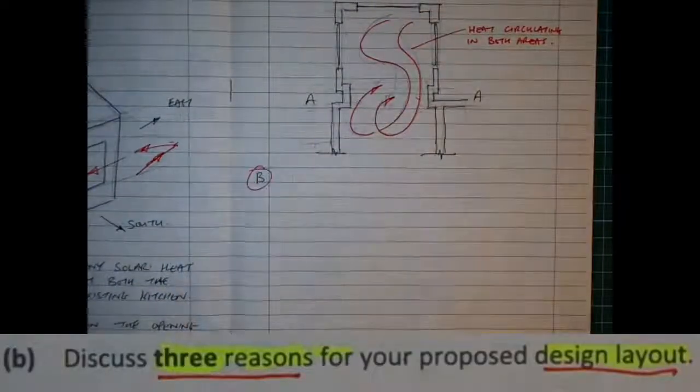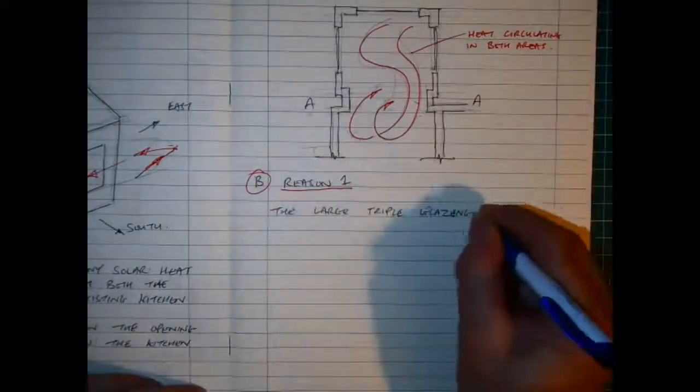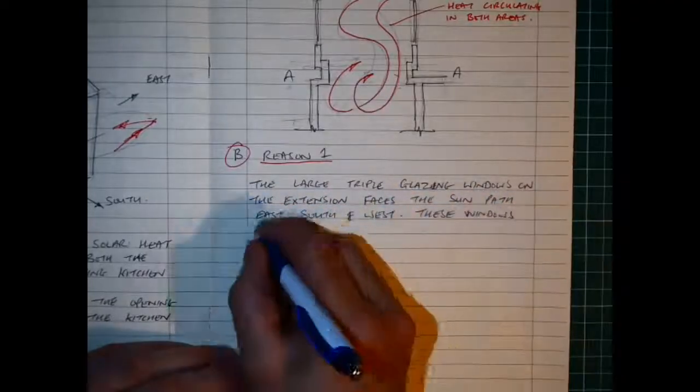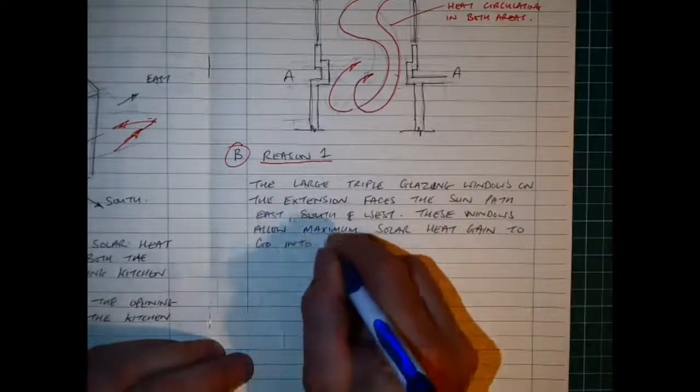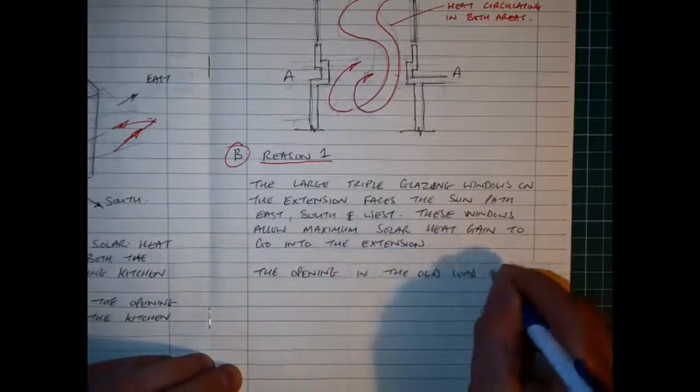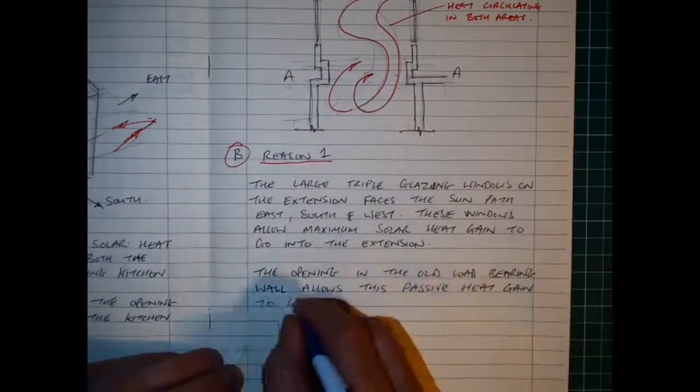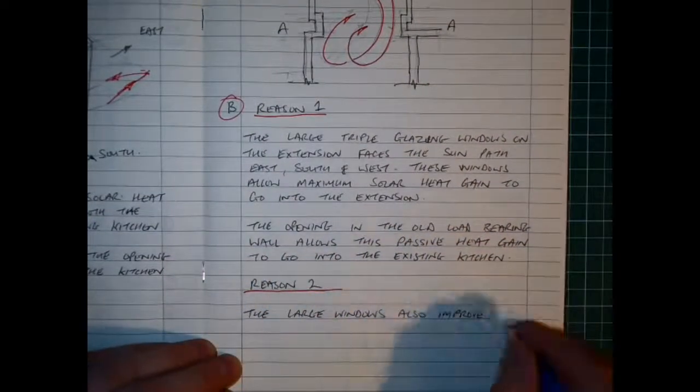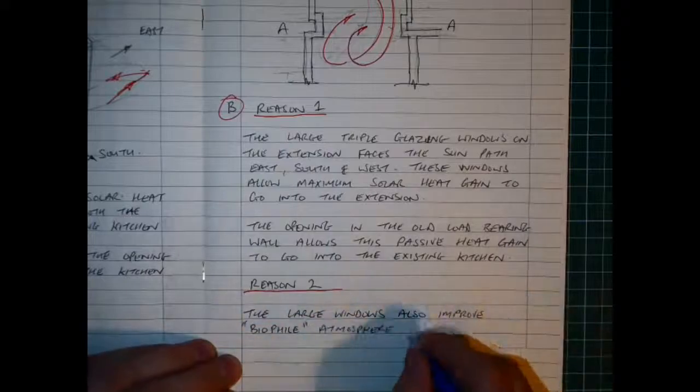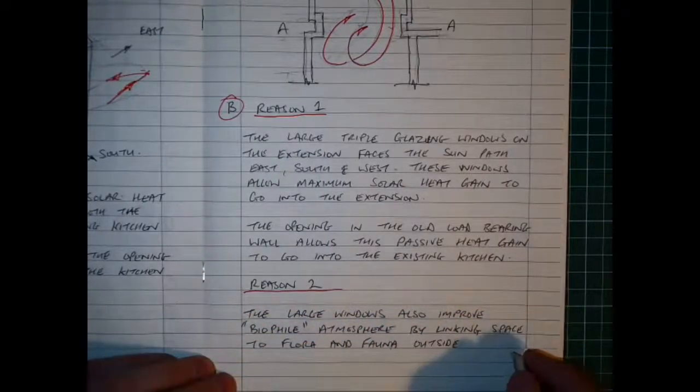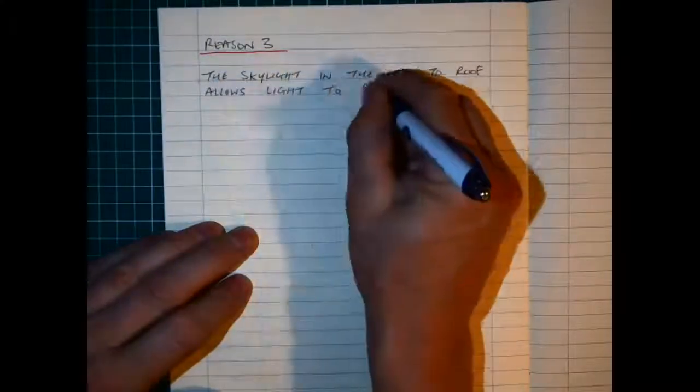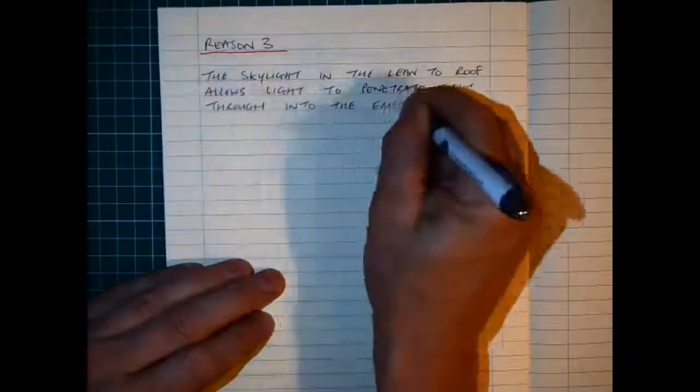The three reasons for your proposed layout: I like starting with reason one, the large triple glazing windows in the extension faces the south path east path of the Sun east south east and west, and the windows allow maximum solar heat gain to go into the extension. The opening in the old load-bearing wall allows passive heat gain to go into the existing kitchen. Reason two: the large windows also improve the biophilic atmosphere by linking space to flora and fauna outside, which helps the well-being of the occupants inside, linking outside within, just making it a healthier living. The third reason is the skylight on the lean-to roof allows light to penetrate right into the existing kitchen.